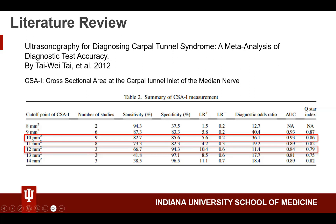Clinically, cutoffs of 10 and 12mm² are commonly used, meaning anything less than 10mm² is more likely normal and anything greater than 12mm² is more likely abnormal. If the median nerve cross-sectional area is greater than 12mm², it's pretty unlikely to be a false positive given the high specificity. Between 10 and 12mm² is considered equivocal. Of course, exam findings and history also guide our diagnosis.